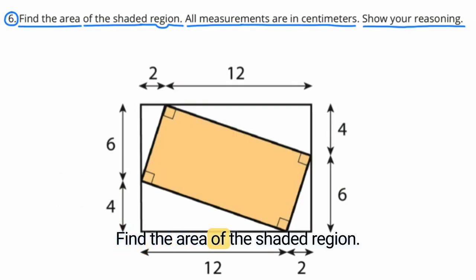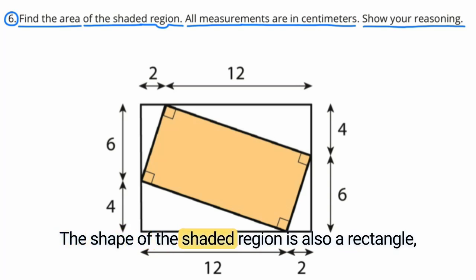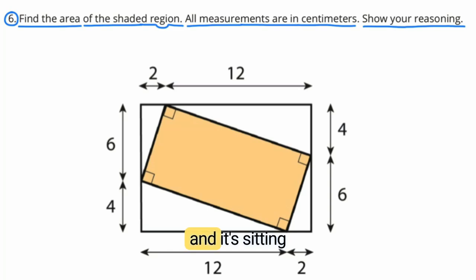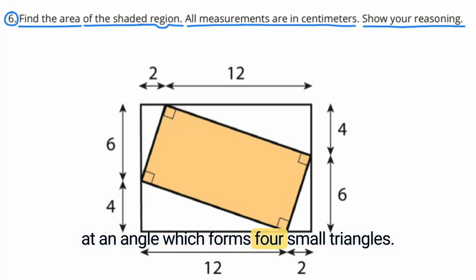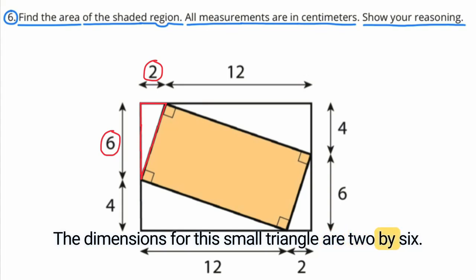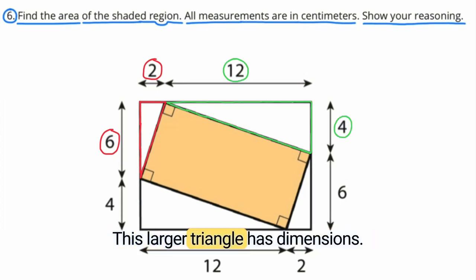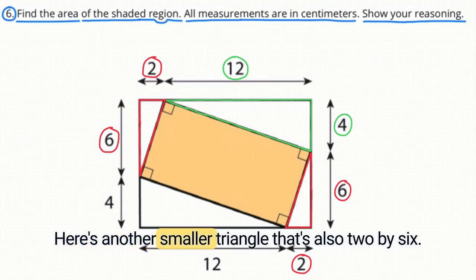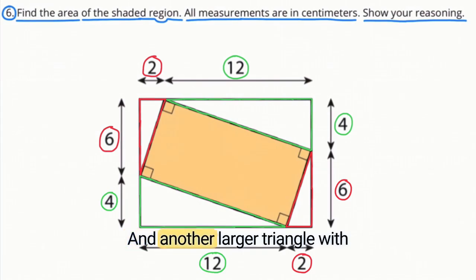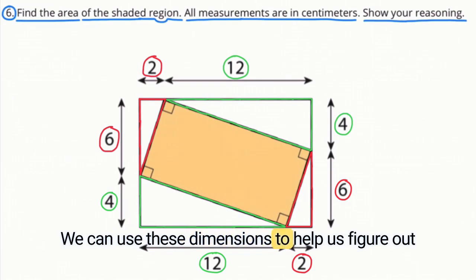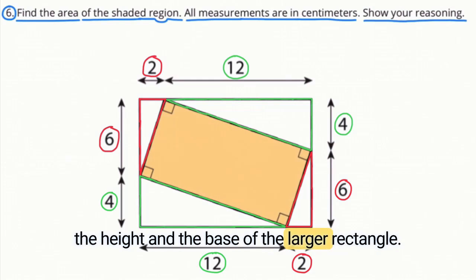Number 6. Find the area of the shaded region. All measurements are in centimeters. Show your reasoning. The shaded region is on the inside of an even larger rectangle. The shape of the shaded region is also a rectangle, and it's sitting at an angle, which forms four small triangles that are not shaded. The dimensions for this small triangle are 2 by 6. This larger triangle has dimensions 4 by 12. Here's another smaller triangle that's also 2 by 6, and another larger triangle with dimensions 4 by 12. We can use these dimensions to help us figure out the height and the base of the larger rectangle.